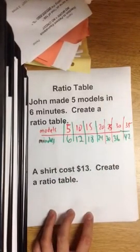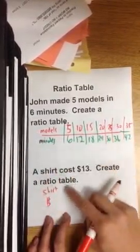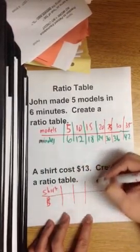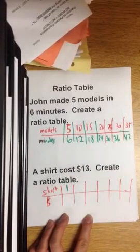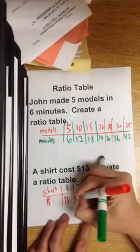A shirt costs $13. Create a ratio table. This one is about shirts and money. One shirt costs $13, two shirts cost $26.